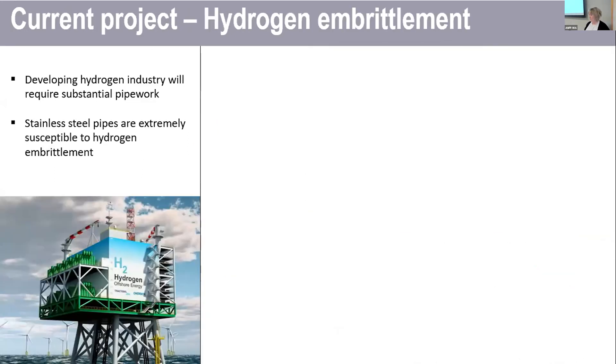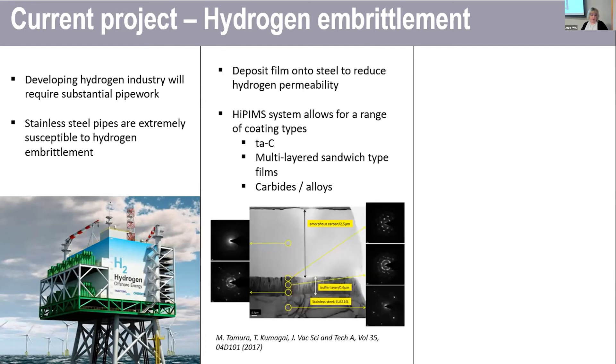Our current project is looking at hydrogen embrittlement. So there's a growing industry of hydrogen energy, which is going to require a lot of pipeline, but those pipelines are typically susceptible to embrittlement from hydrogen. We would like to try and solve this by depositing a film onto the steel to reduce the hydrogen permeability.